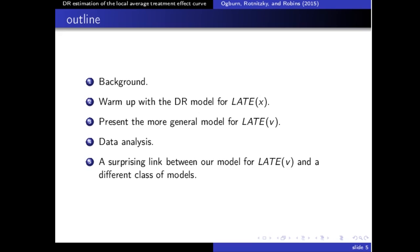To minimize technical details and overwhelming notation, I'll first walk through a simplified version: estimating LATE(X), LATE as a function of the full covariate vector. This allows me to gloss over some complicated details of our actual contribution, which is estimating LATE(V), but all details are in the paper and supplement. After describing our model for LATE(V), I'll describe a data analysis, then end with a surprising connection between our LATE model and a different class of models previously described in the literature.